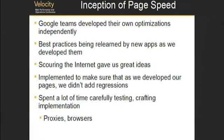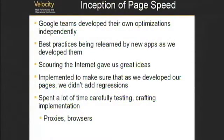Why did we develop it? We noticed at Google that a bunch of teams were doing a lot of optimizations, each one in their own world. The search team was doing speed optimizations, the image search team was working on other things. With PageSpeed, we wanted to make sure that the best practices learned by one team aren't re-learned by another team on new apps. We also spent a lot of time looking at best practices on the internet to identify what makes sense for improving website performance, and implemented all of this as part of our regression models.